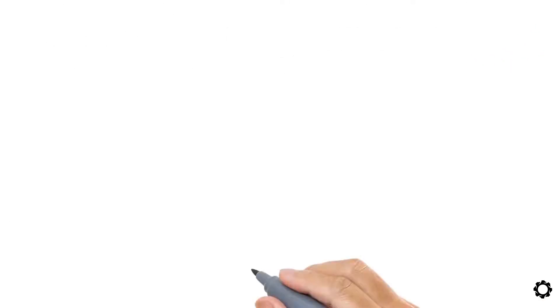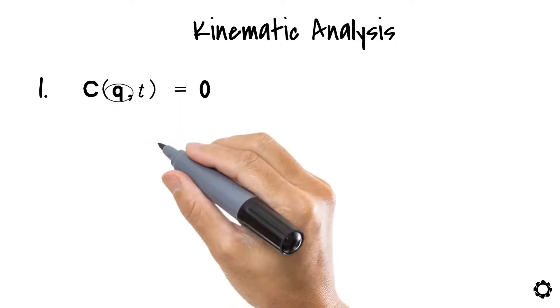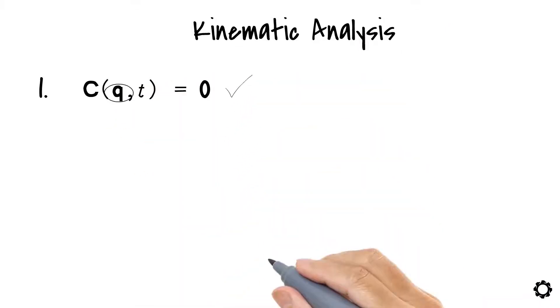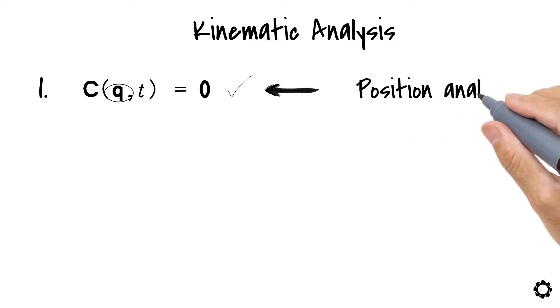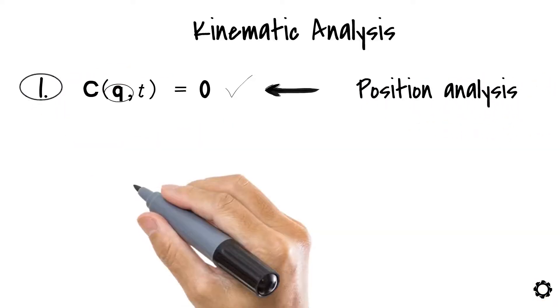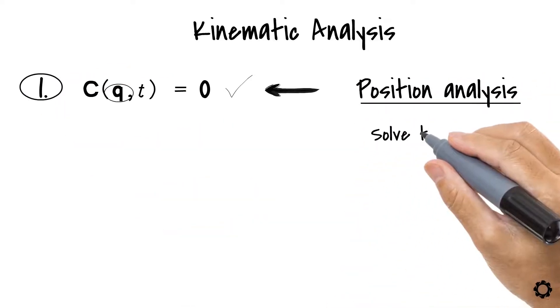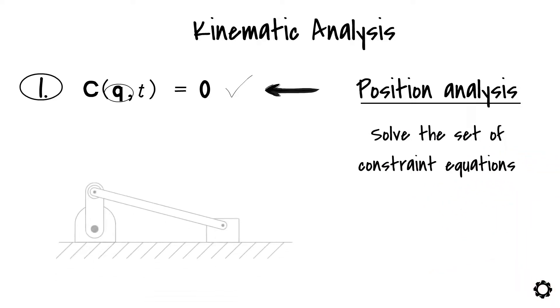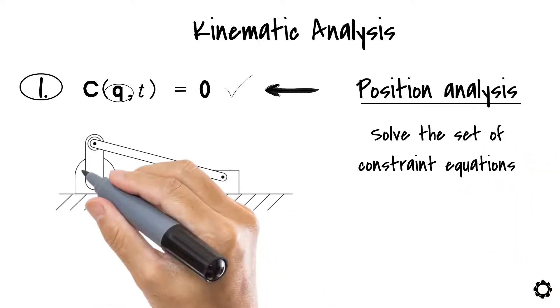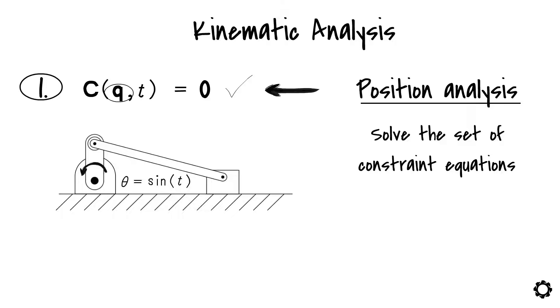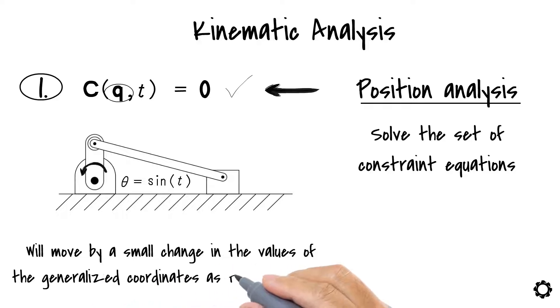The first step in the kinematic analysis is to find out the values of the generalized coordinates that fulfill this set of constraints. This is called position analysis. The first thing to do in this formulation is to solve the set of constraint equations for the current system's configuration. Because of the motion or motions imposed, it is expected that the mechanism will move by a small change in the values of the generalized coordinates as time passes by.